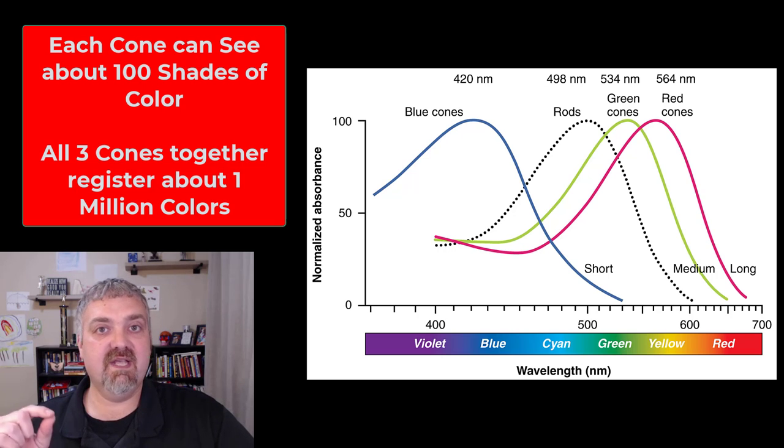Because we have three types of cones, 100 times 100 times 100 means that normal human eyes can register about a million different colors. Some people can see more, and if you're colorblind and missing one or more of these cones, you would see a lot less. Some people see the whole world in grayscale, which is what your rods see.